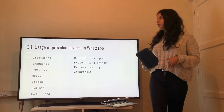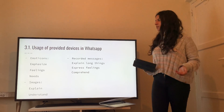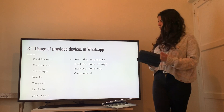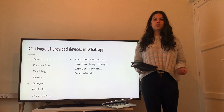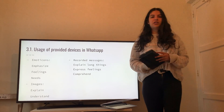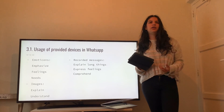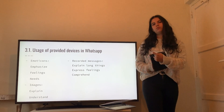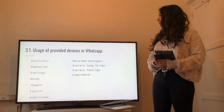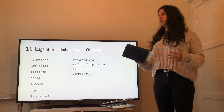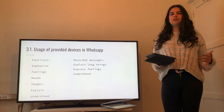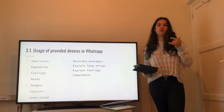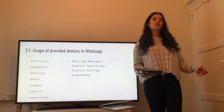Now I'm going to explain how I myself use the tools that WhatsApp provides. Sometimes emoticons are helpful because they help us emphasize what we say and express feelings, emotions and needs. Images can also help — instead of explaining a whole thing, we can just send a picture, which is easy to understand and shows people exactly what you want to explain. Recorded voice messages can also be very useful: if you want to explain something long, it's easy to just send a voice message, and it's helpful because your voice tone expresses what you're feeling, making it easier to be understood.